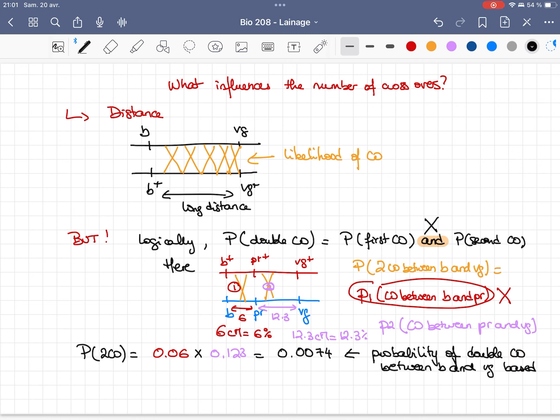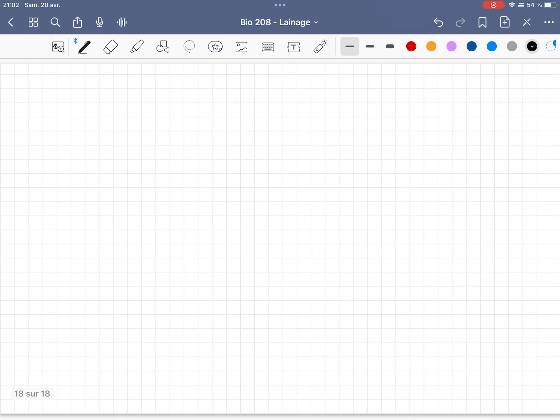So the probability of double crossing-over is 0.74%. So with a probability of 0.74% of having two crossing-overs, we are supposed to see 0.74% of double recombinants in our fly population.